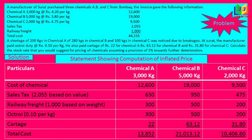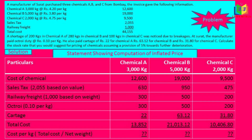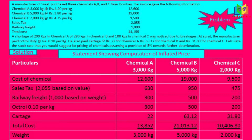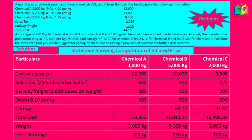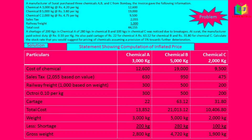The total cost of each chemical is now calculated: Chemical A = Rs 13,852; Chemical B = Rs 21,013.12; Chemical C = Rs 10,406.80. Next, we find the weight after deducting the shortage due to breakage. Chemical A: 3,000 − 200 = 2,800 kg; Chemical B: 5,000 − 280 = 4,720 kg; Chemical C: 2,000 − 100 = 1,900 kg. This gives us the gross weight.